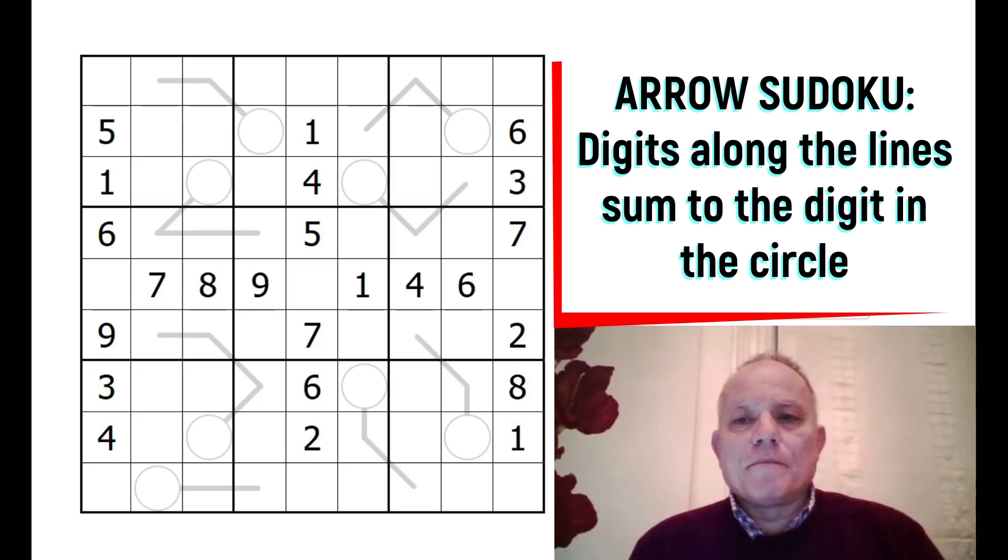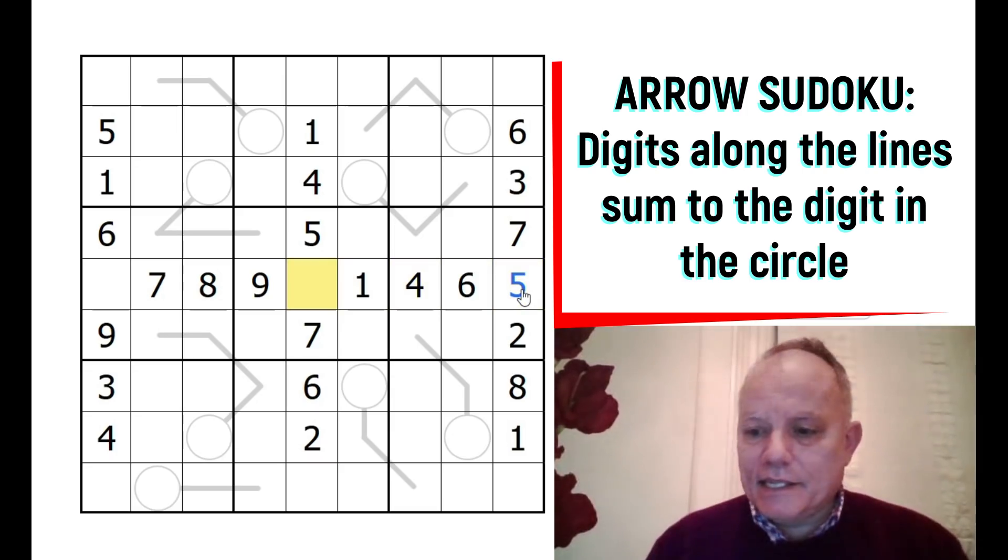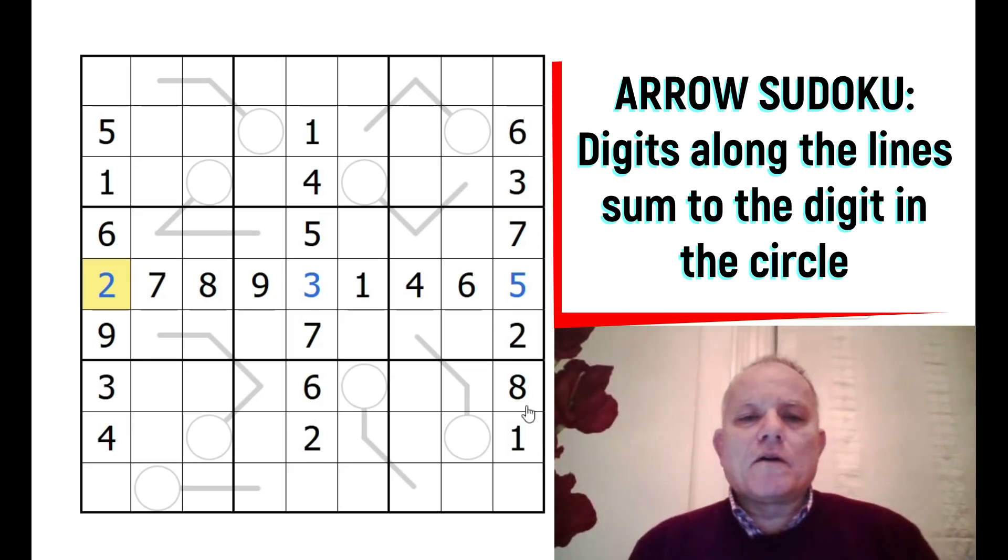Let's get cracking. This middle row has got a lot of numbers filled in already. We need 2, 5, and 3, so we can easily put those in straight away. Let's have a look at the first column - no, we can't complete any of columns 1, 5, and 9, so now we need to find something else.